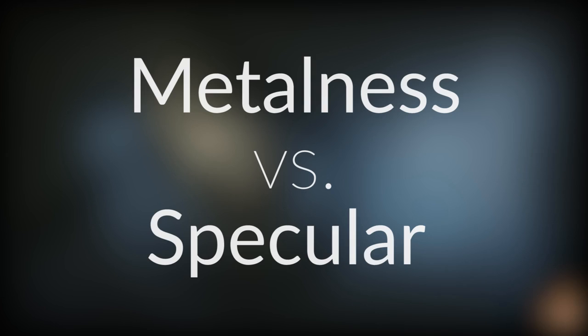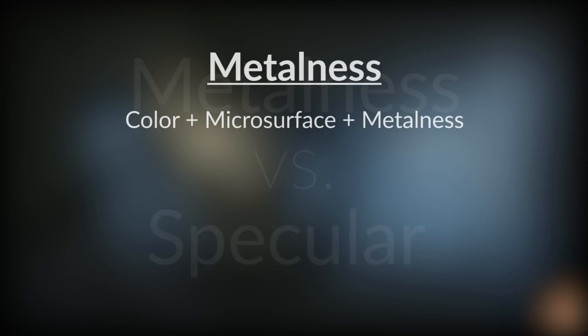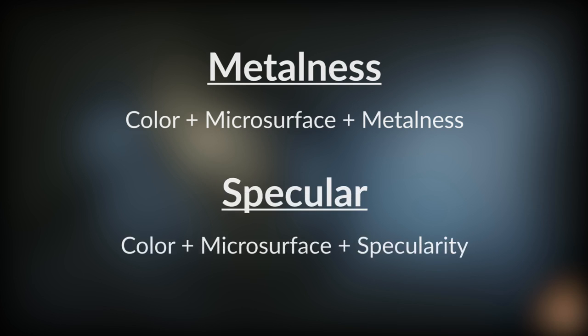In this video, I just want to go over the ones you're most likely to run into and how to use them, because some are only intended to be used in combination with others. The core of the metalness workflow is made up of three components: color, microsurface, and metalness. The specular workflow, however, is made up of color, microsurface, and specularity.